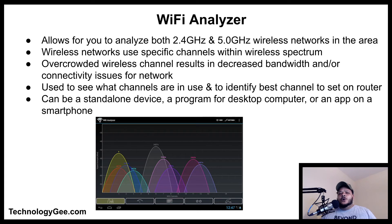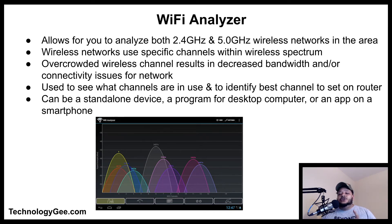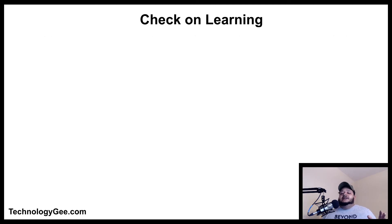A Wi-Fi analyzer allows you to analyze both 2.4 GHz and 5 GHz wireless networks in the area. Wireless networks use specific channels within the wireless spectrum, and an overcrowded wireless channel results in decreased bandwidth or connectivity issues. You can use a Wi-Fi analyzer to see what channels are in use and identify the best channel to set up on your router. A Wi-Fi analyzer can be a standalone device, a program for a desktop computer, or an app on your smartphone.